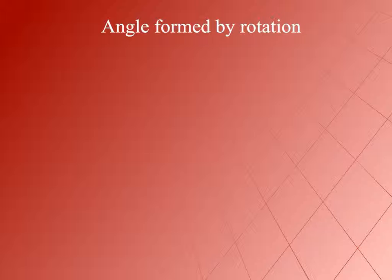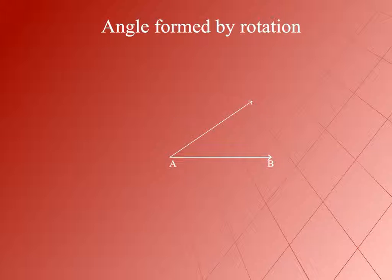Angle Formed by Rotation. Let us consider a ray AB which rotates around its initial point A. When it rotates around A, it will have different positions at different times. Suppose at a certain time it rotates and attains the position AC. It means AC forms angle CAB with its original position AB.